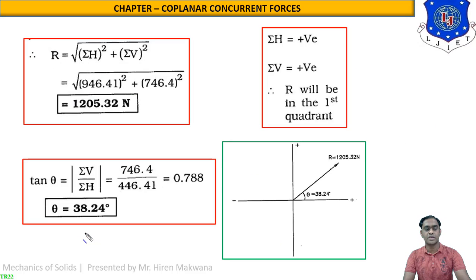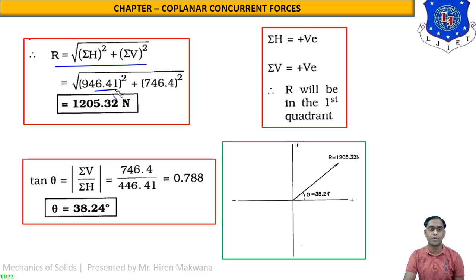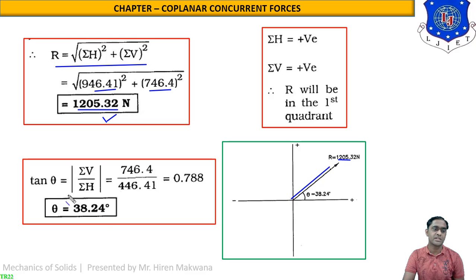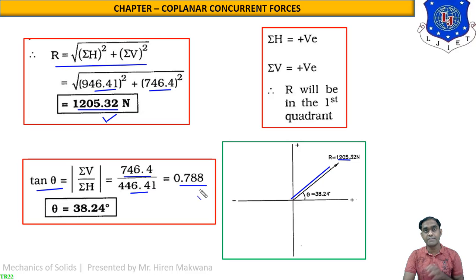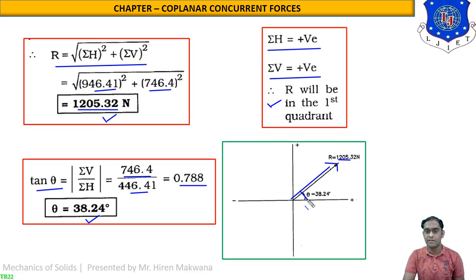Now for the calculation of R and theta: R equals the square root of sigma H squared plus sigma V squared, where sigma H equals 946.41 and sigma V equals 746.4, giving R equals 1205.32 N located in the first quadrant. The direction: tan theta equals sigma V divided by sigma H, which is 746.4 divided by 946.41, giving 0.788. Taking the inverse tan gives theta equals 38.24 degrees.